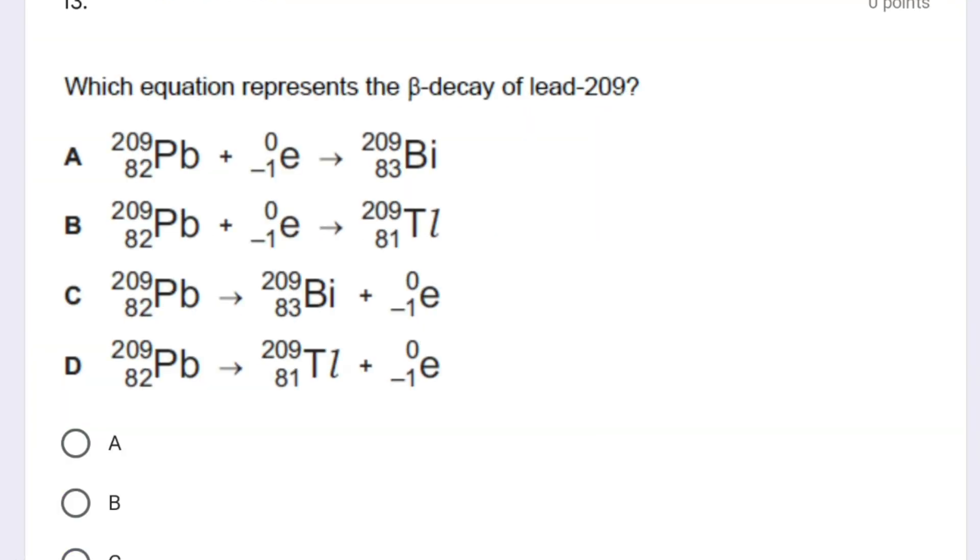This question is related to beta decay. Which equation represents the beta decay of lead-209? When you look at all the options, the correct option is C because when a beta emission takes place, the atomic mass will be the same, which is 209, but atomic number will increase by 1.